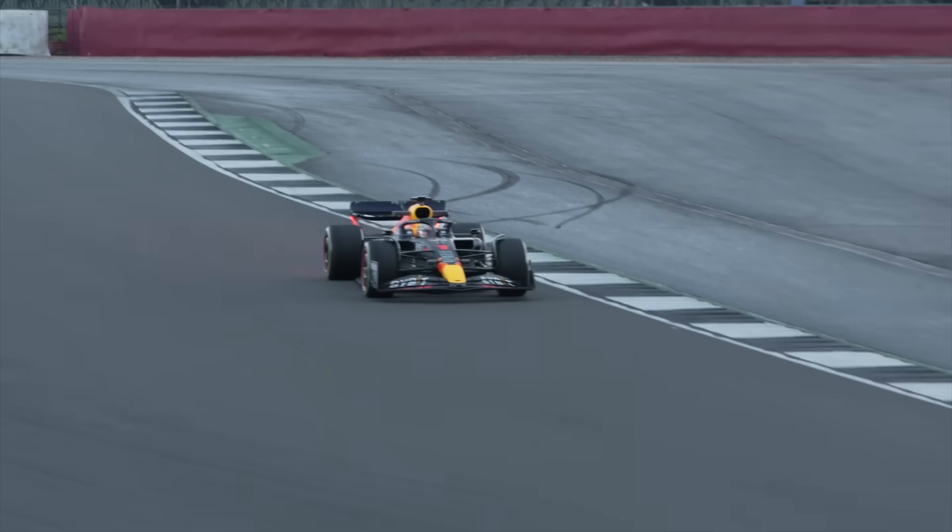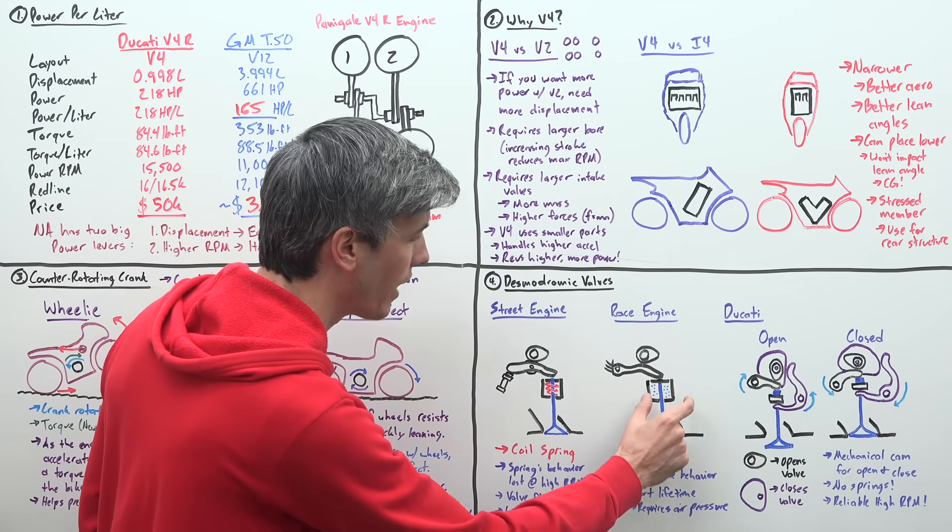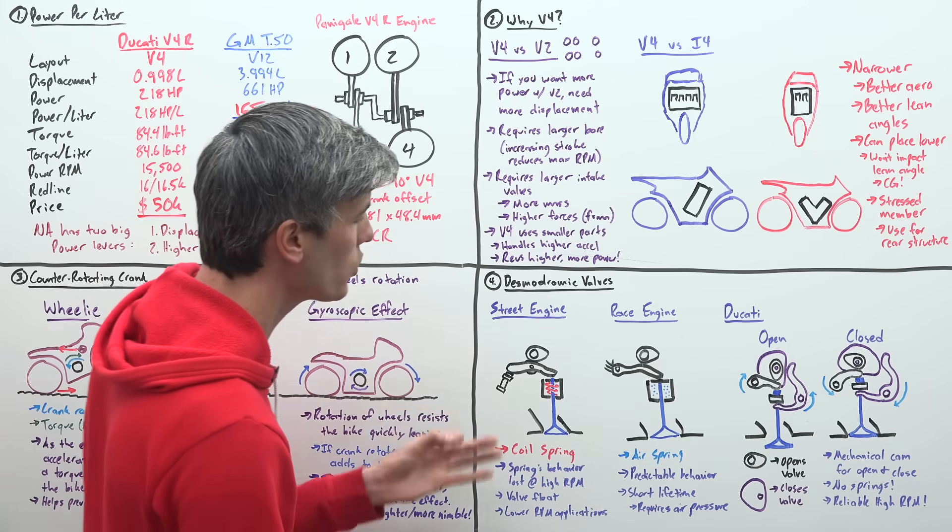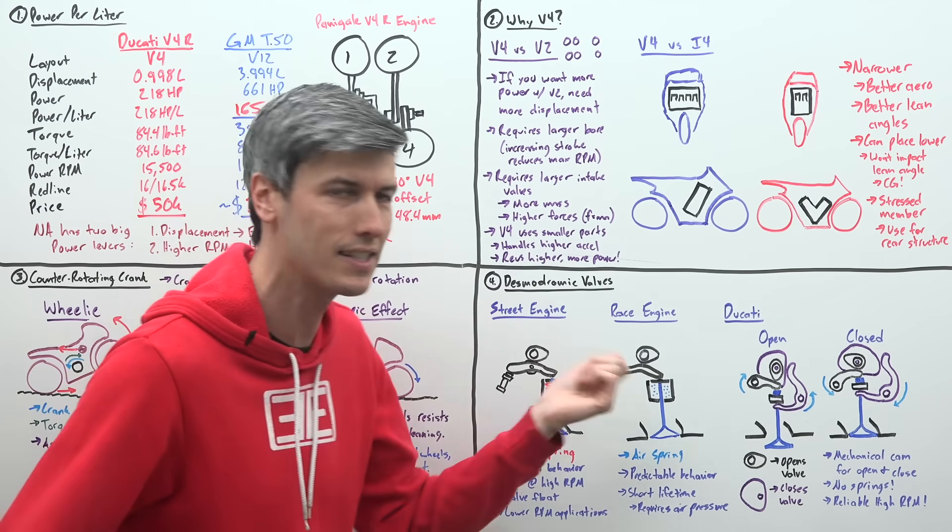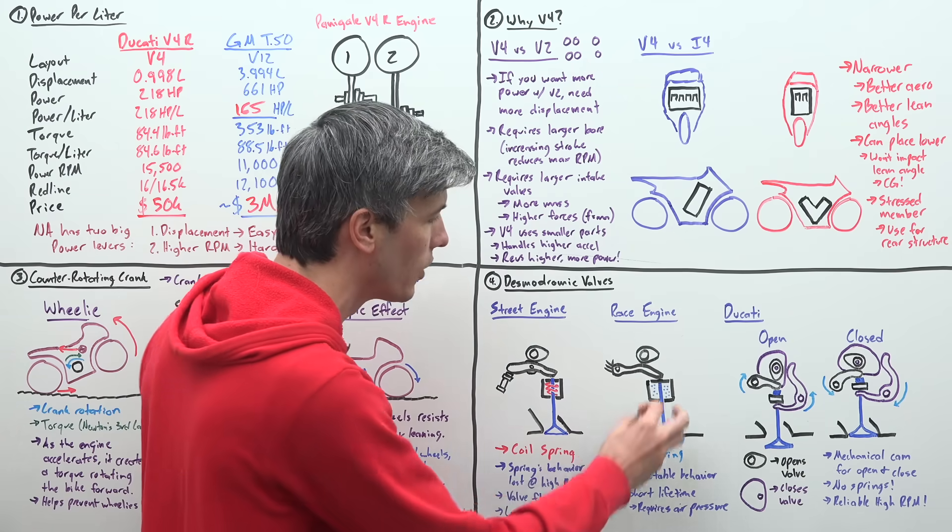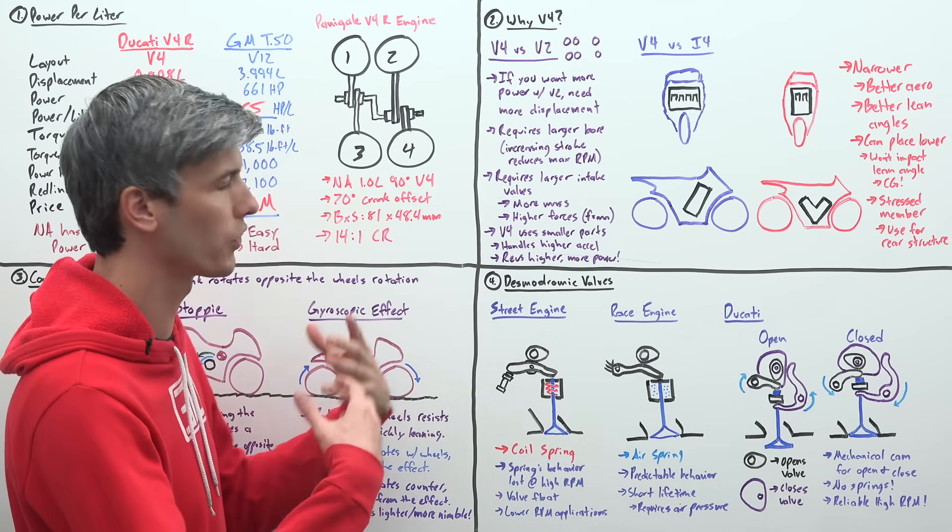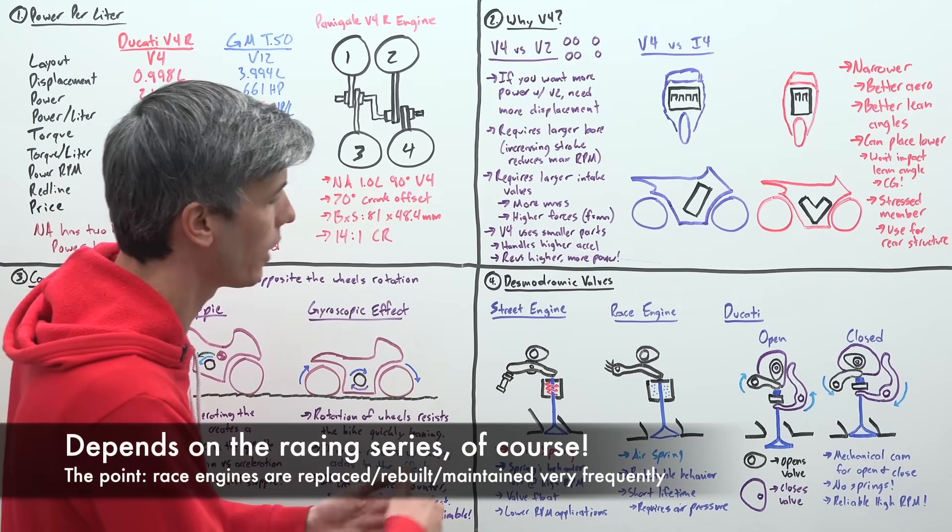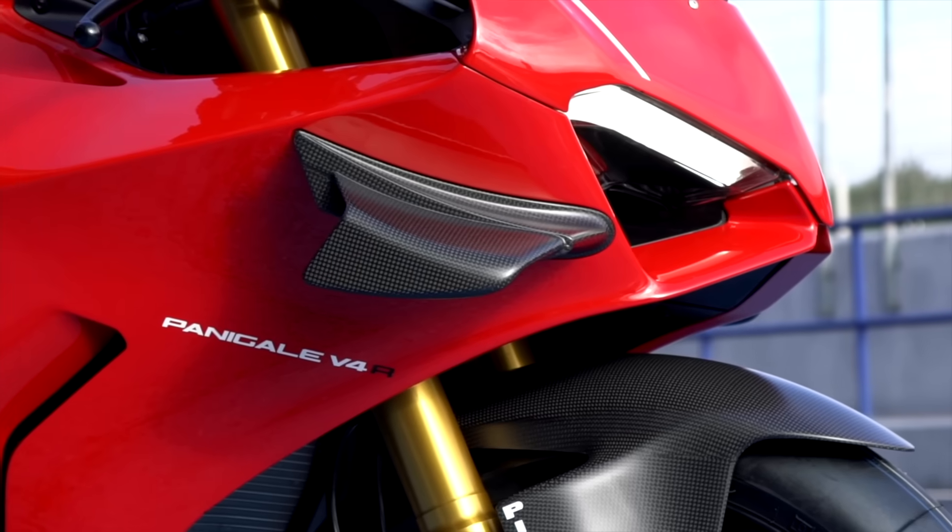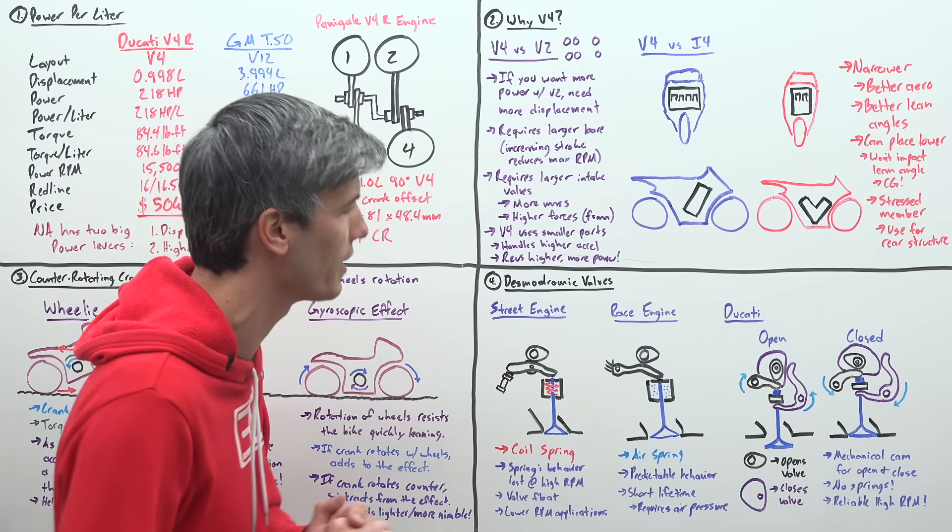Now, with this mechanical spring, its behavior is kind of lost at high RPM. You start to run into something called valve float where the control of that valve is no longer predictable. So it's good for low RPM applications, but it starts to lose its merit once you get into higher RPM applications. So what do they do in racing with really high revving engines? Well, they use pneumatic springs for that valve. So you have an air spring, so that air pressure is a very predictable behavior, so you can use it at really high RPM. The challenge is that this has a really short life to it because you're maintaining that seal and you have to perfectly maintain the seal and ensure you have air pressure in order to maintain that spring's effectiveness. So these race engines, they get rebuilt each race, you add that air pressure back in, it lasts the life of the race. But for something like a road-going bike, you're going to want something that's going to last much longer. So you don't have these crazy maintenance intervals.